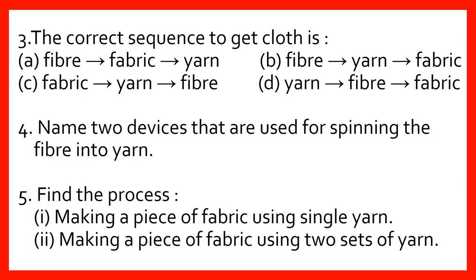Question number 3: The correct sequence to get cloth is — Option A: Fiber to Fabric to Yarn. Option B: Fiber to Yarn to Fabric. Option C: Fabric to Yarn to Fiber. Option D: Yarn to Fiber to Fabric.